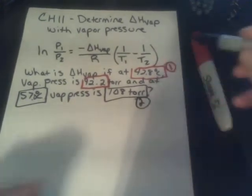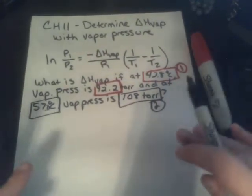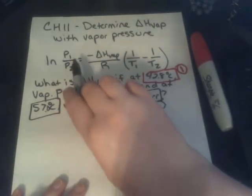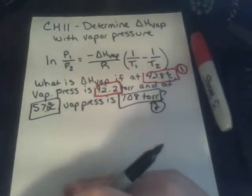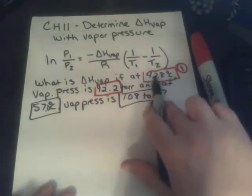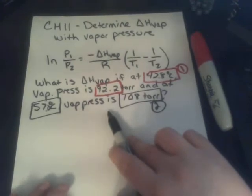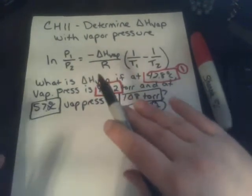And we'll call the 57 degrees Celsius and the 108 torr, we'll call that situation two. As long as you assign thing one and thing two, and you're consistent with it in the equation, then you will get the right answer. This could be situation two, and this could be situation number one. It doesn't matter. I just picked it arbitrarily.